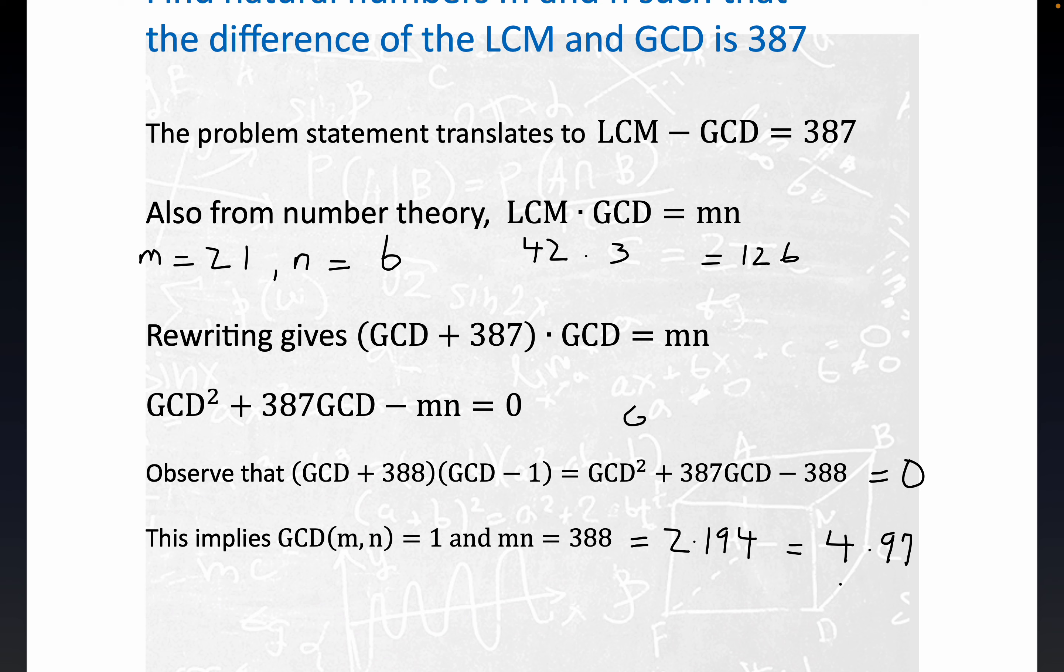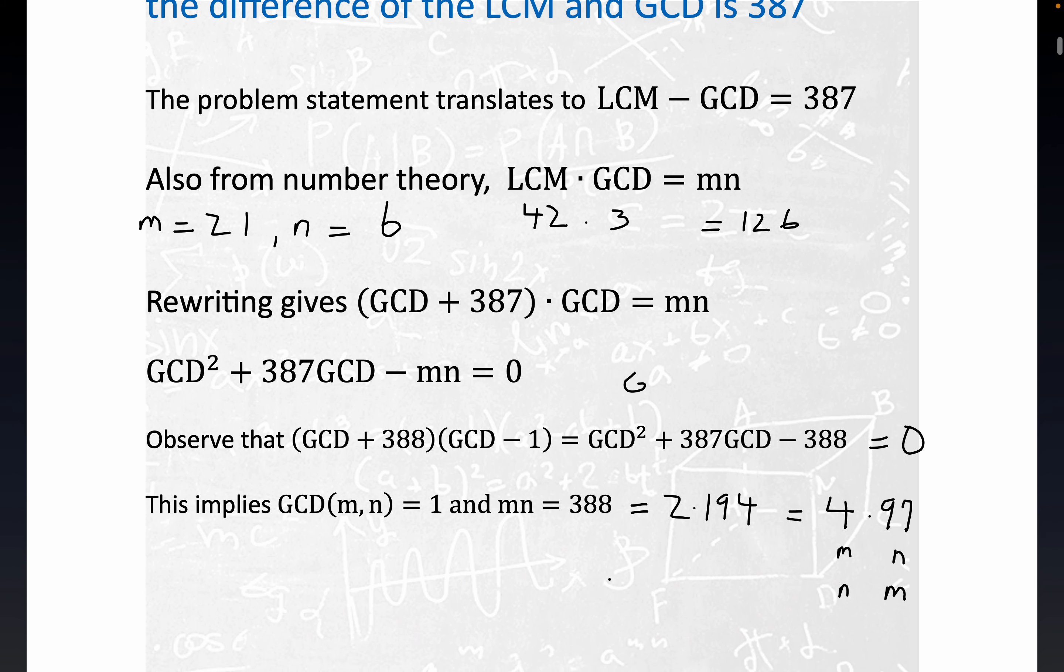If we take M to be 4 and N to be 97, or the other way around since this is totally symmetric, we have solutions to our problem.